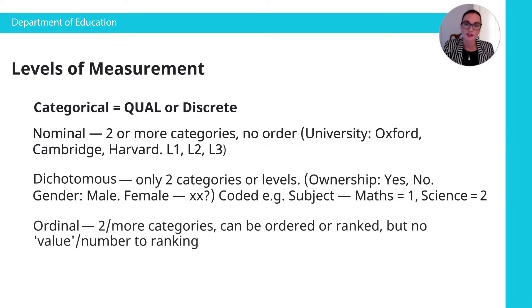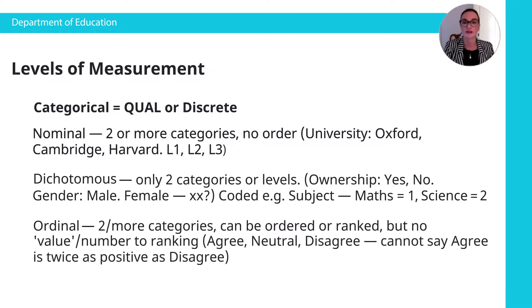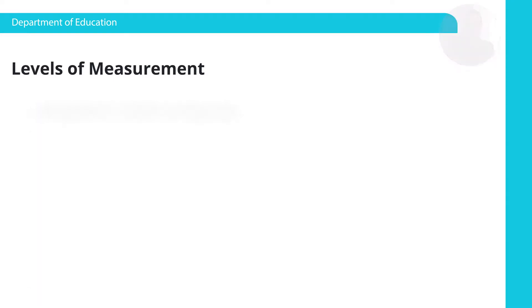Ordinal variables have two or more categories that can be ordered or ranked. But there's no value or number to the ranking. For example, Likert scale data is actually ordinal data. Agree, neutral, disagree. We can't say agree is twice as positive as disagree. All the types of students: undergraduate, masters, doctoral. So these need to go in that order. You need to finish your undergrad to move on to a masters. You need to finish your masters to move on to your doctorate.